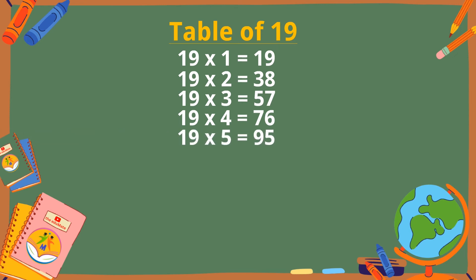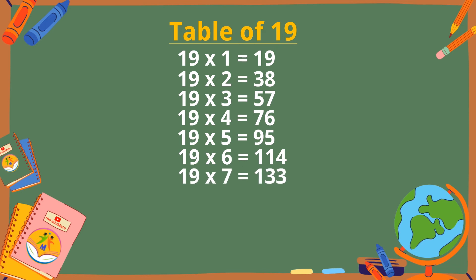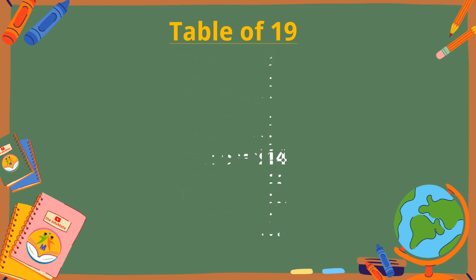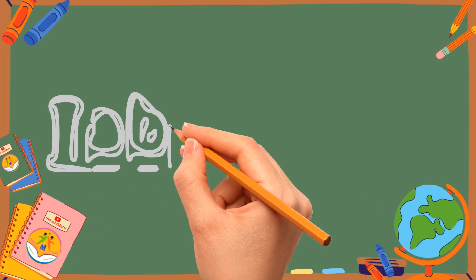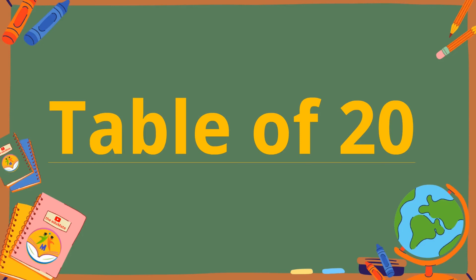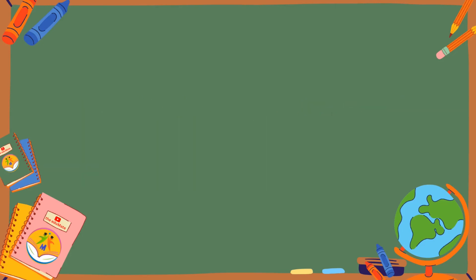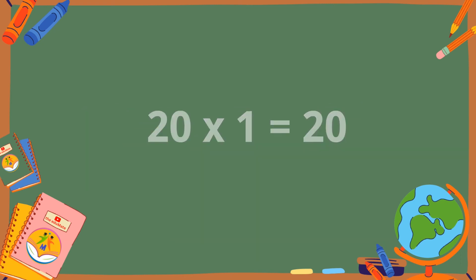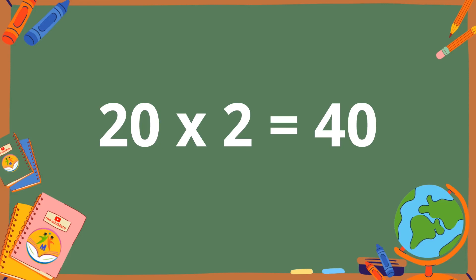19 fives are 95. 19 sixes are 114. 19 sevens are 133. 19 eights are 152. 19 nines are 171. 19 tens are 190.